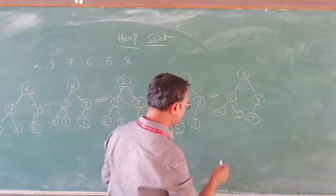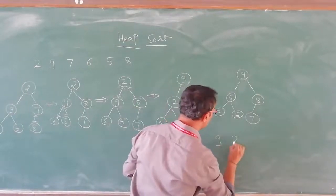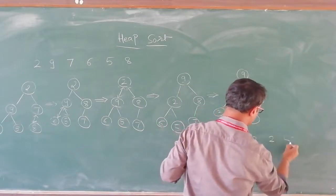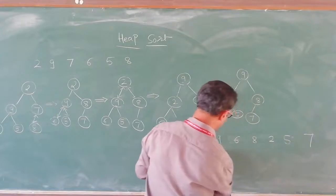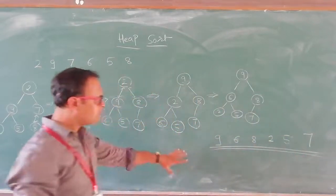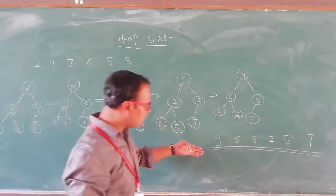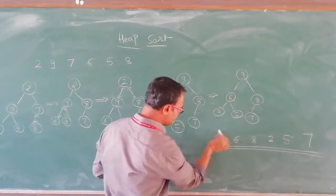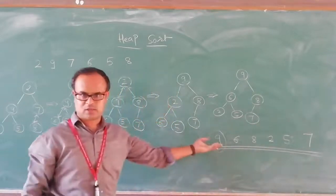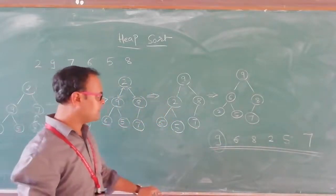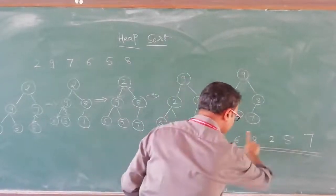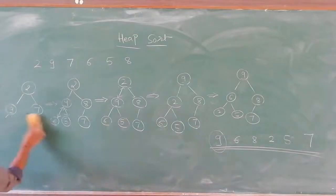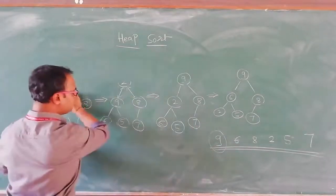That is stage 1 of heap sort, where we get the heap: 9, 6, 8, 2, 5, 7. The first stage of heap sort is over — we have our heap. You can see that the first node is the biggest. These elements are now given as input to the second stage, which is the maximum node deletion stage.